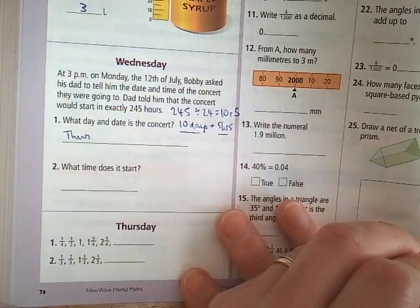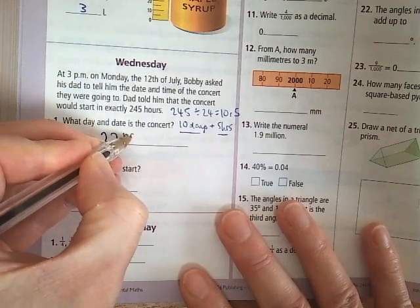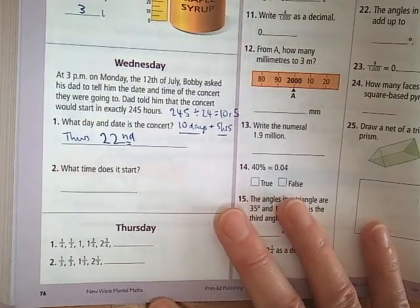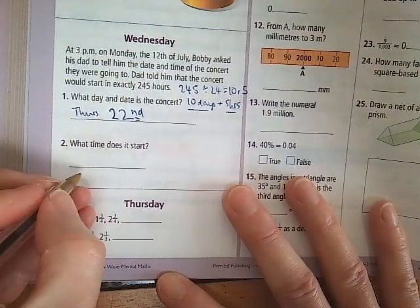So it's 10 days from today. Today is Monday the 12th. So in 10 days time, it's going to be Thursday the 22nd. Funny night for a concert, school night. None of you would ever go to a concert on a school night, I'm sure.